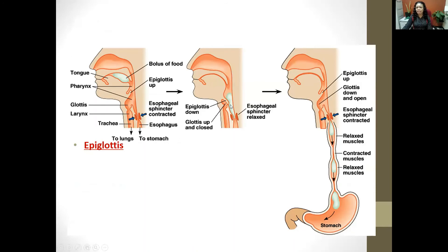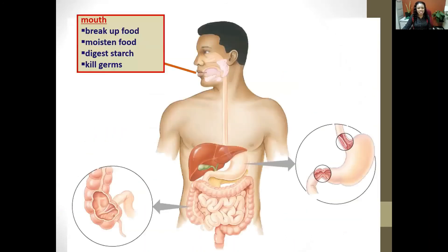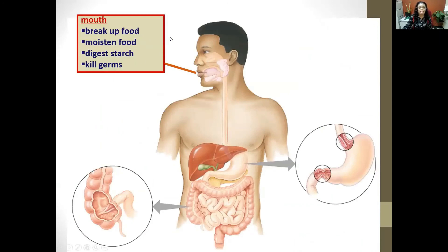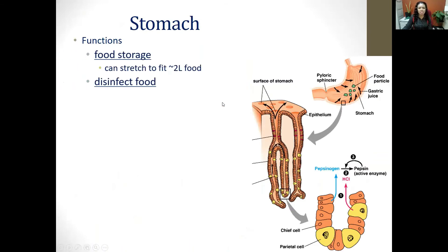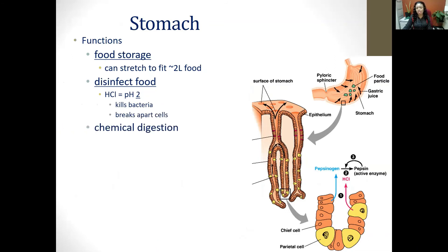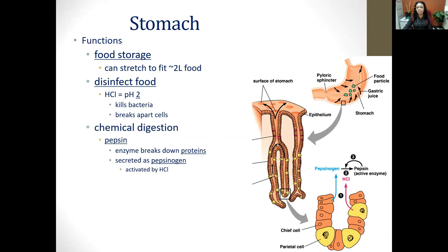The epiglottis at the back of your throat prevents food from going into the wrong tube — the windpipe or trachea — which would cause choking. Food moves from the mouth into the esophagus and then into the stomach, which can stretch to hold up to two liters. The stomach contains hydrochloric acid with a pH of about 2 to 3, which kills ingested bacteria and creates the optimum environment for the enzyme pepsin so that chemical digestion of proteins can begin.